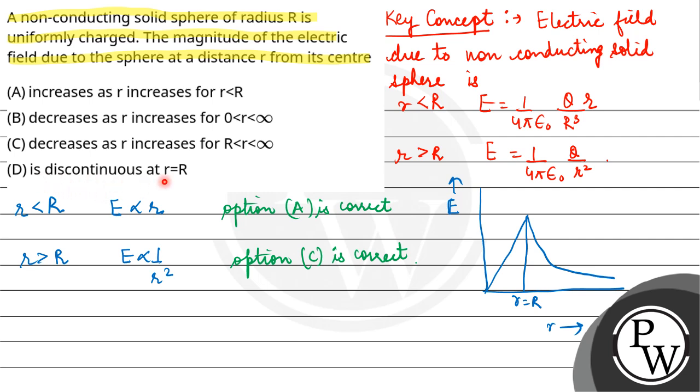This electric field is not discontinuous. It is continuous at r equals R. So our final answer is option A and option C. These two options are correct.